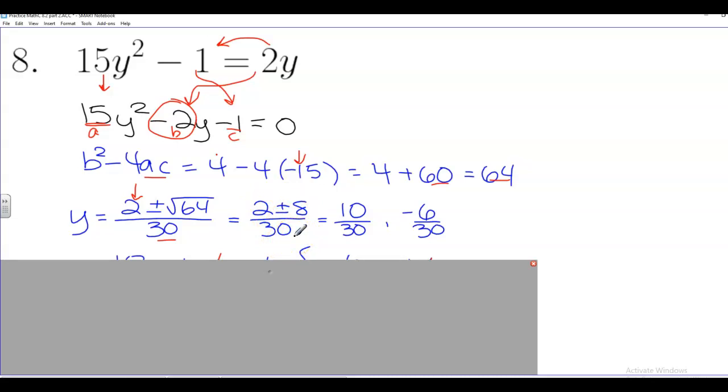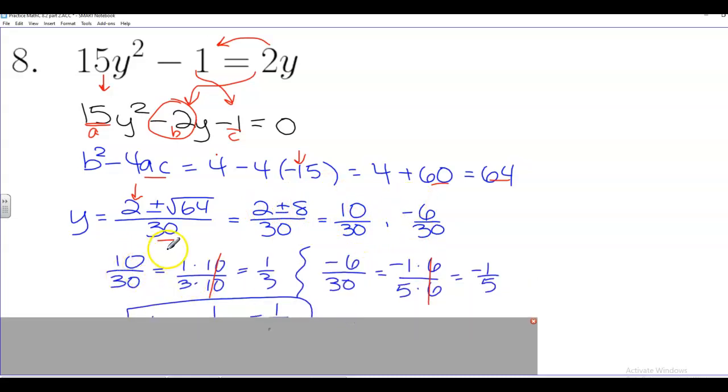So then we do the plus or the minus, right? So 2 plus 8, that's 10, over the 30. 2 minus 8, that's negative 6, over the 30.